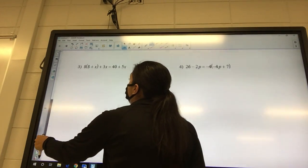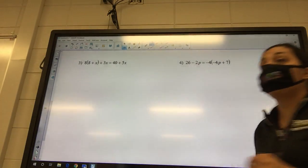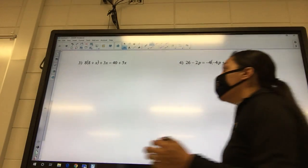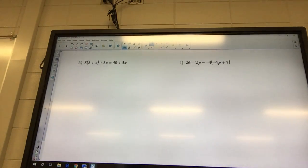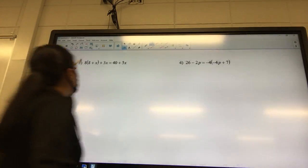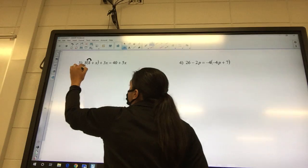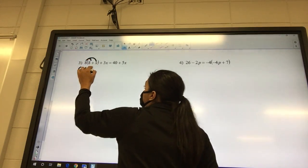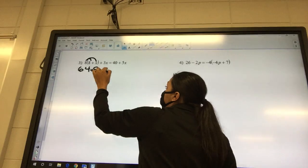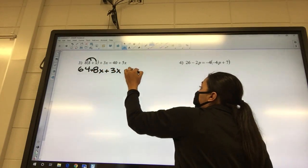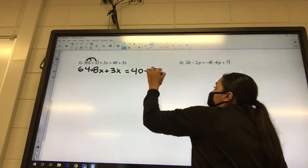Okay, look at number three. What's the first thing we need to do? Distribute. Our first step is always going to be to distribute. So eight times eight is going to be 64, and then eight times 8x is going to be plus 8x, and now you got this plus 3x equals 40 plus 5x.